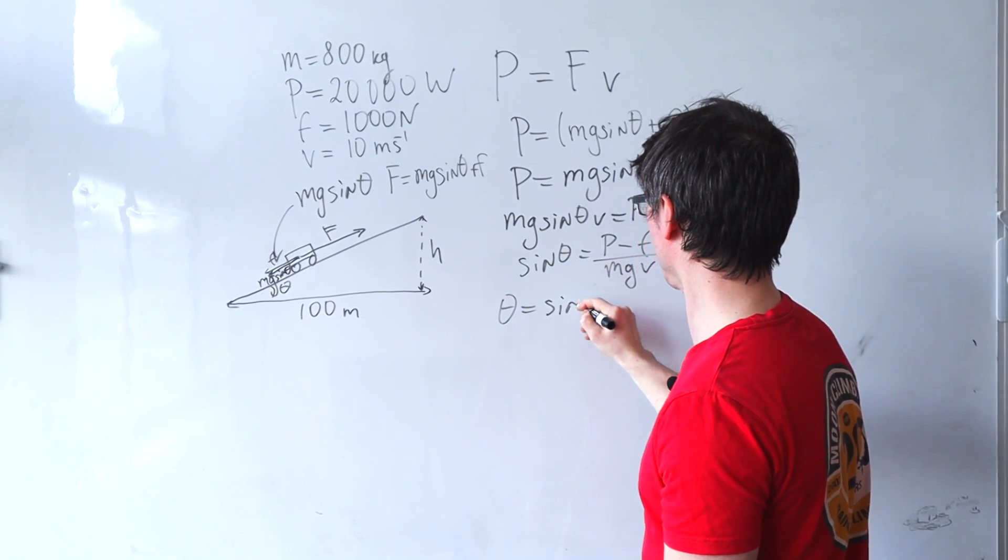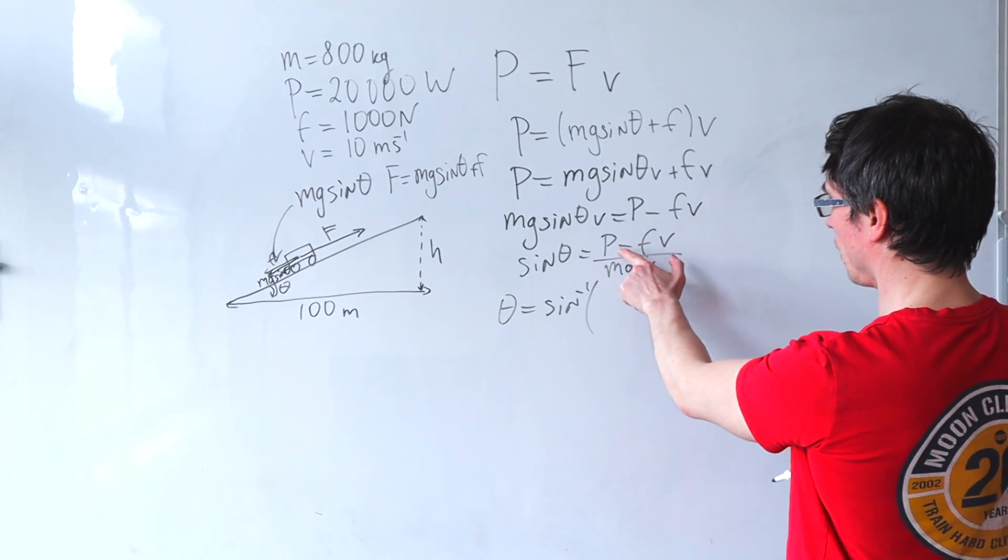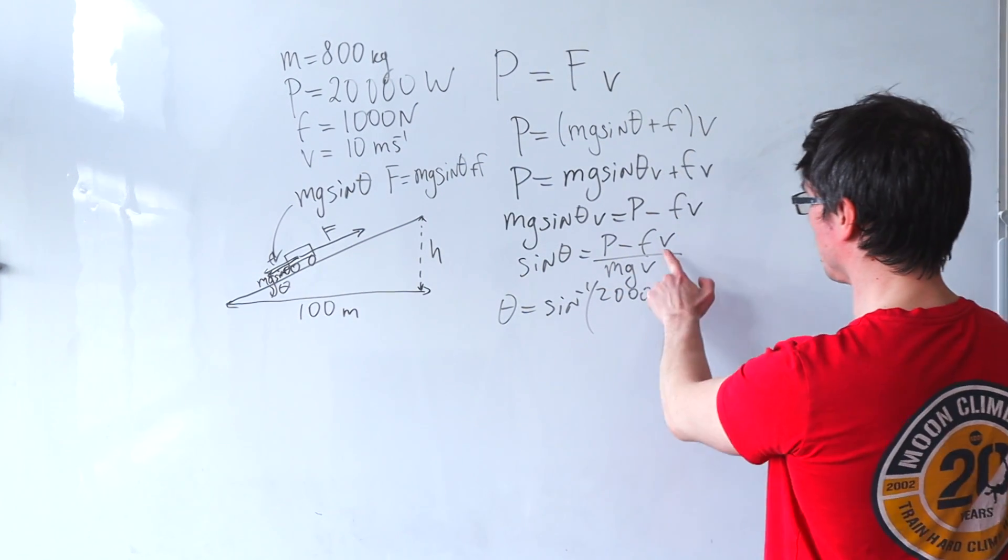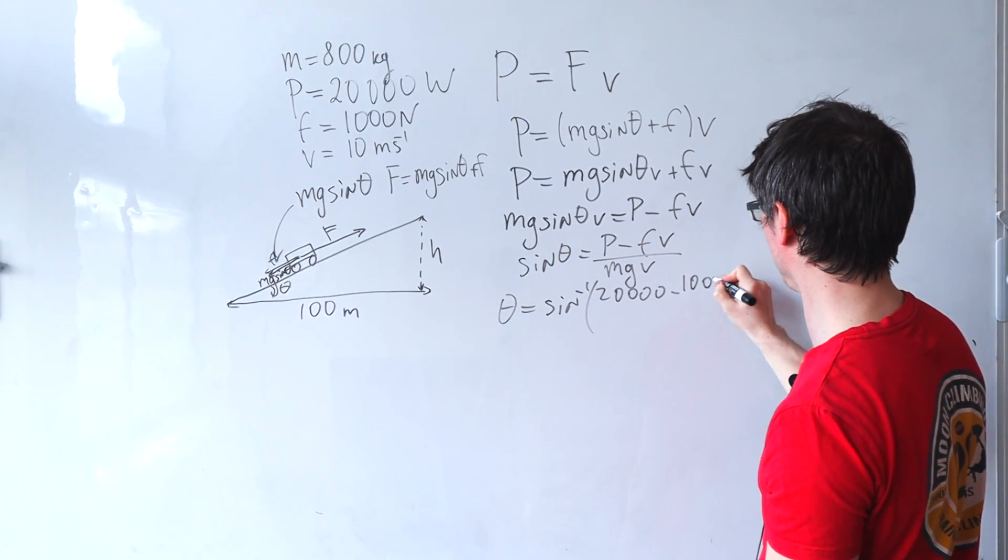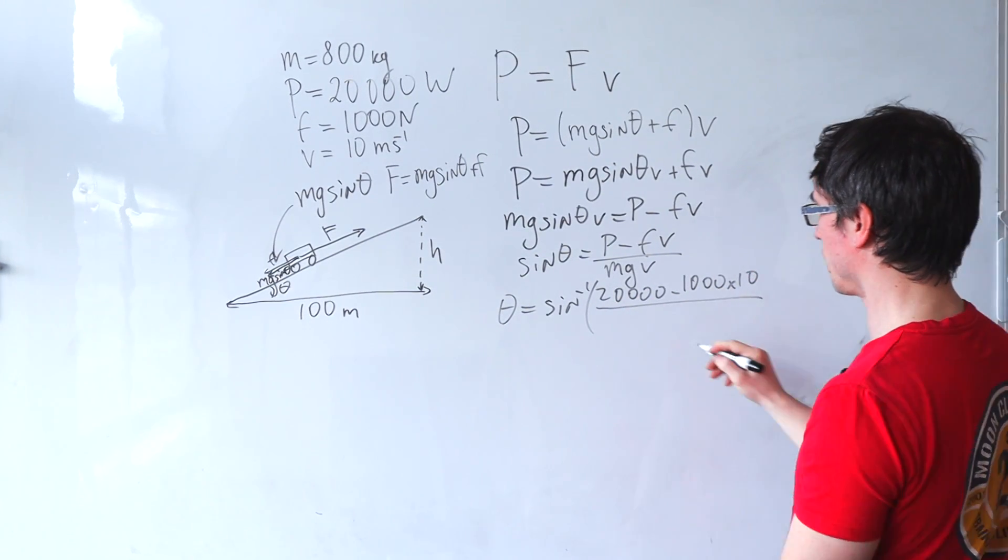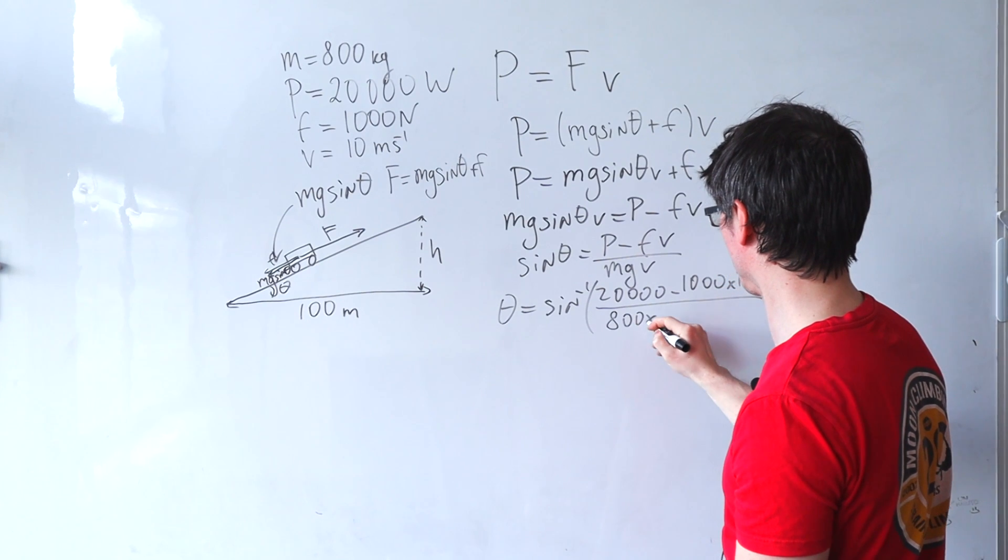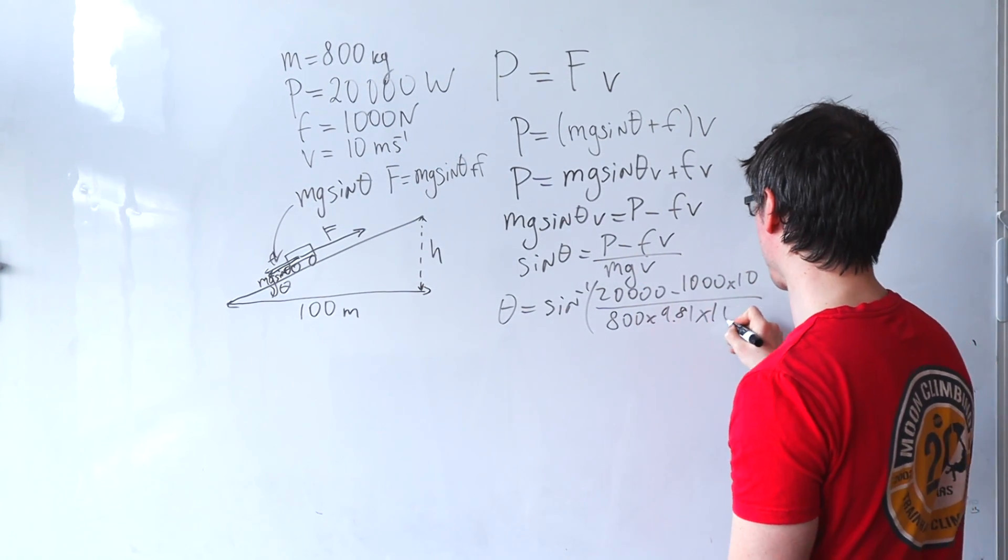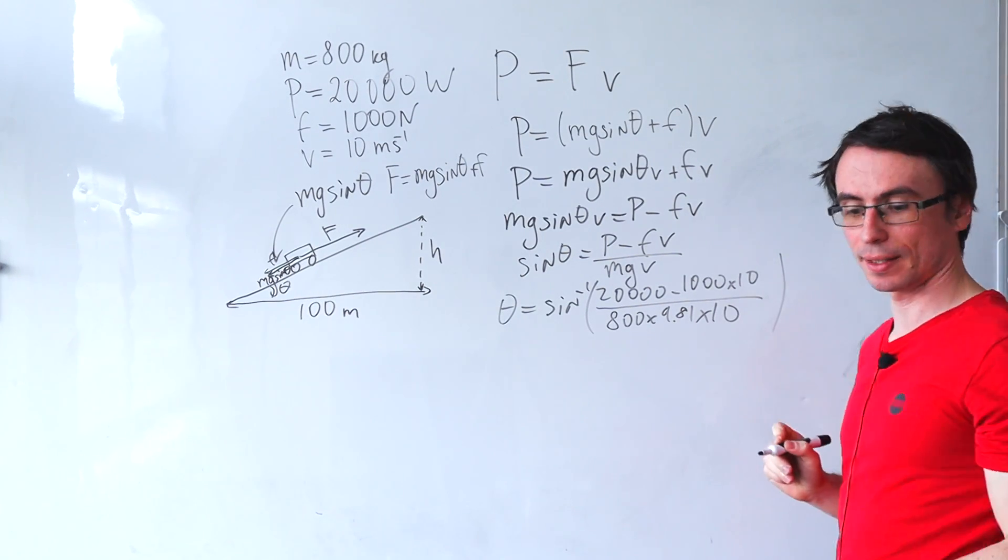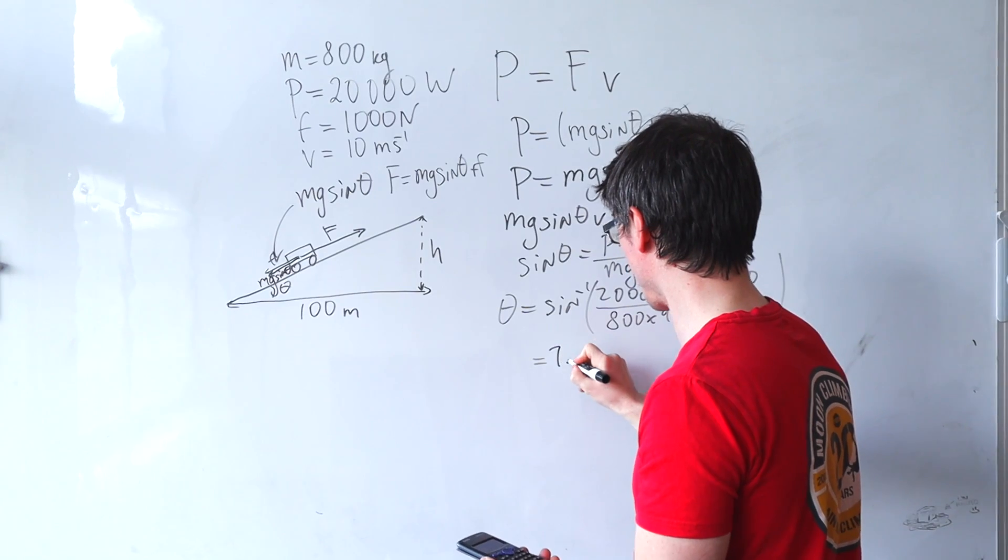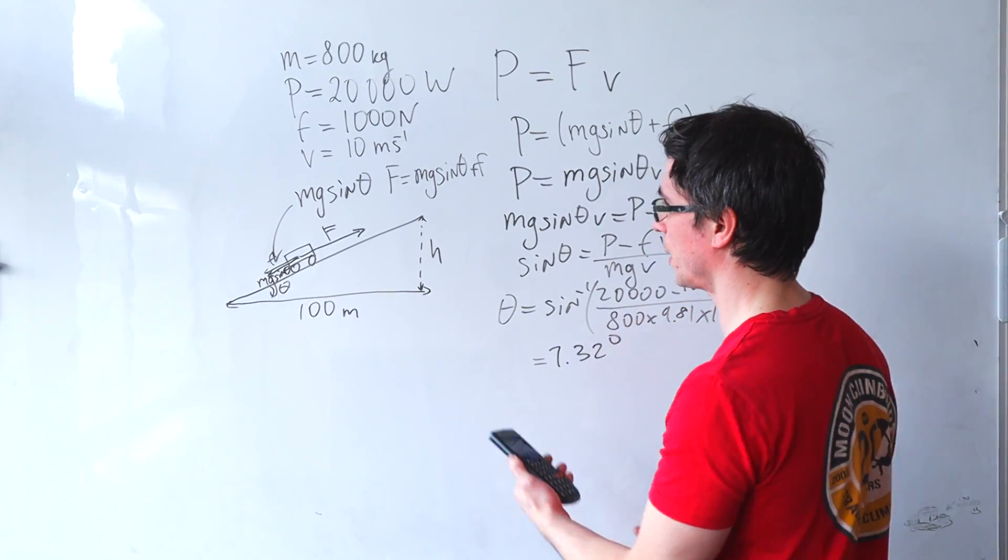Theta will be the inverse sine of the power, which was 20,000, minus the frictional force, which was 1000 multiplied by 10, then divided by 800 times 9.81 for g, multiplied by 10 again. If we put this into a calculator, we're going to get around 7.32 degrees.